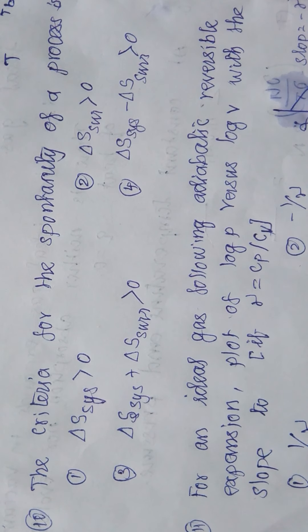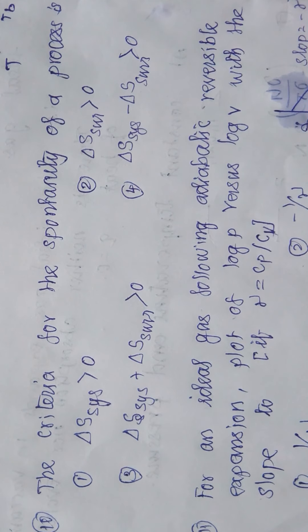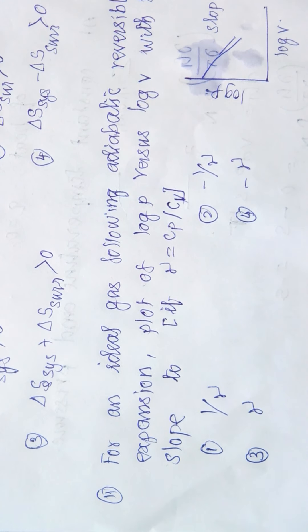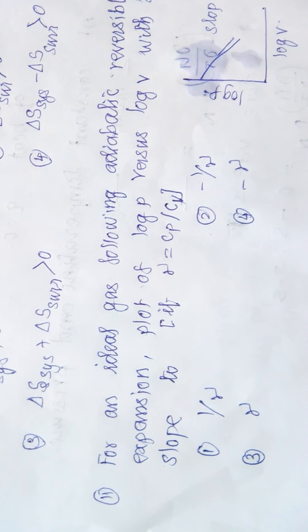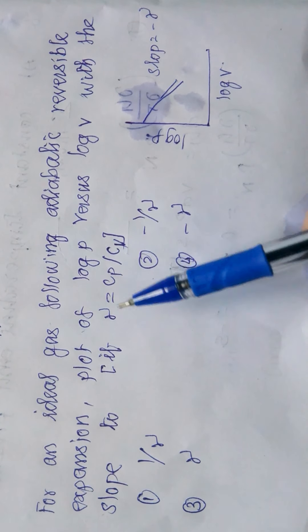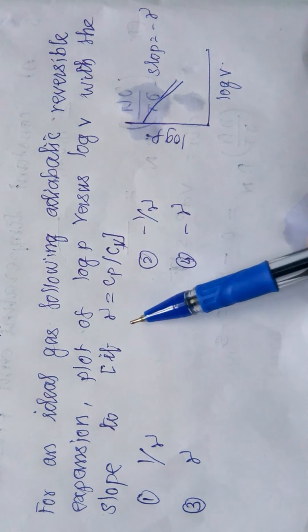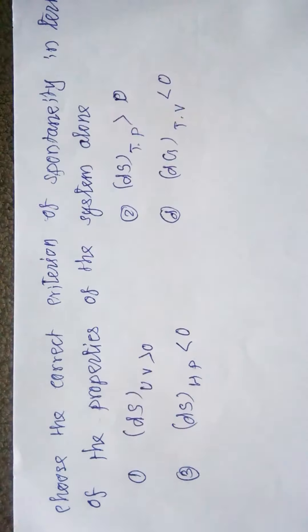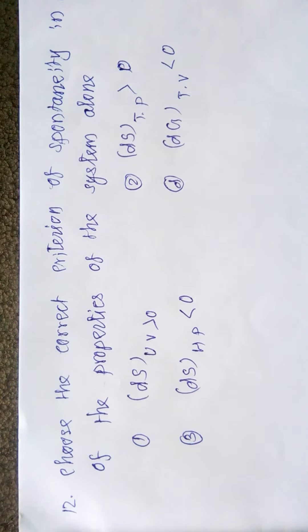For an ideal gas following adiabatic reversible expansion, in a plot of log P versus log V, the slope is negative. It is equivalent to -γ, where γ = Cp/Cv. So for log P versus log V, the slope is negative (-γ).